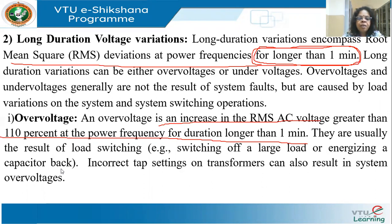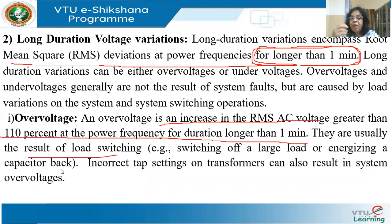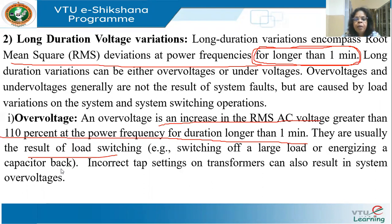Over voltages are usually the result of load switching — suddenly a large load is thrown off and voltage shoots up. We have seen the Ferranti effect. During low loads — because some loads have been removed — voltage will go up. Incorrect tap settings on transformers are another cause.